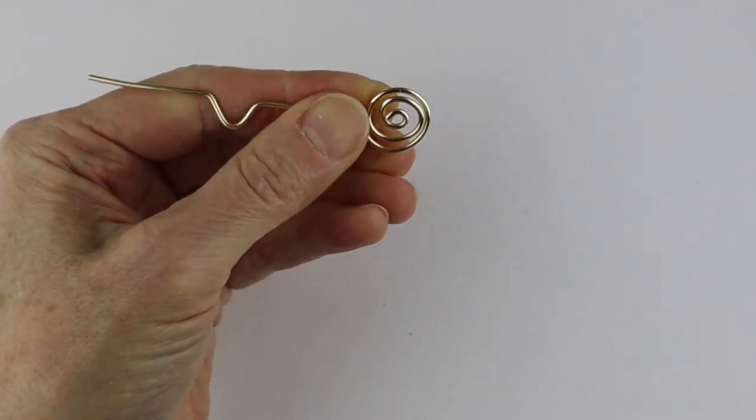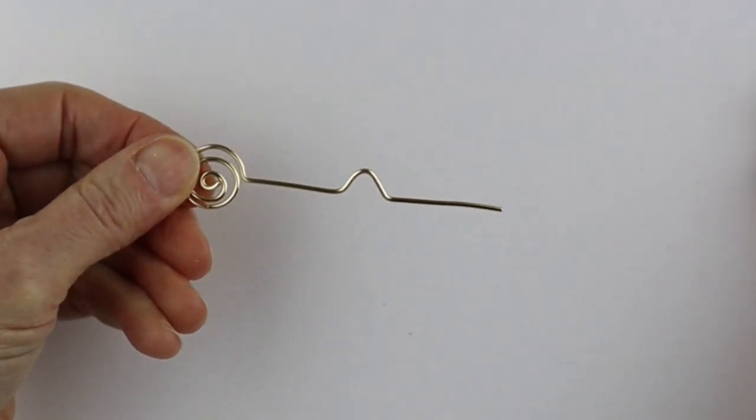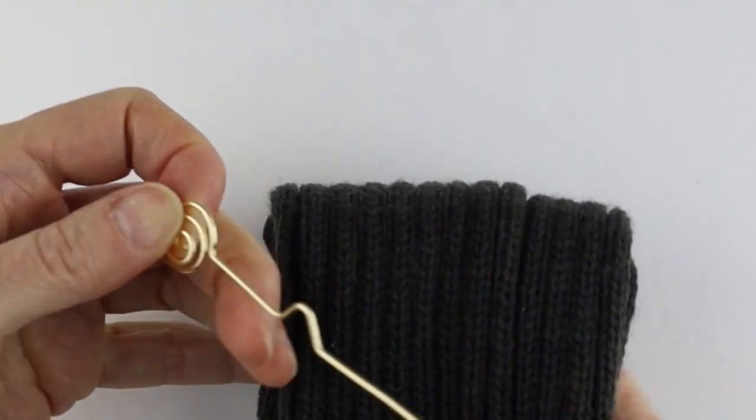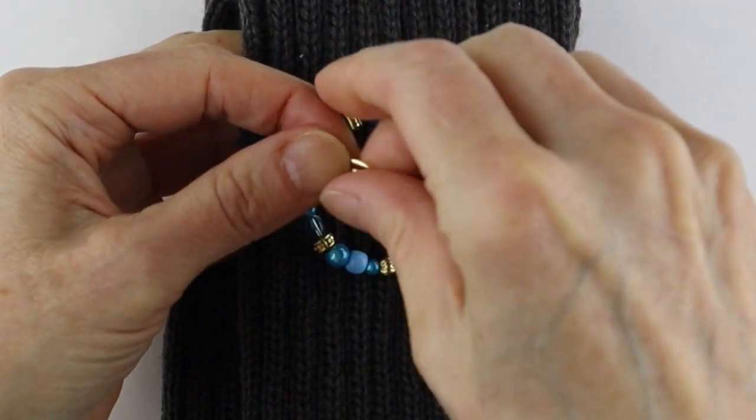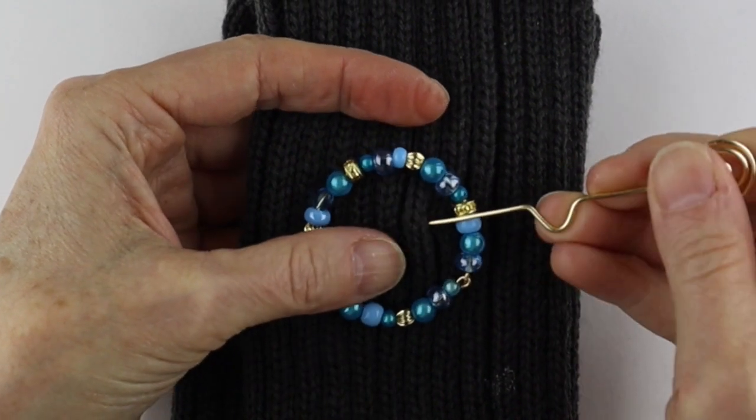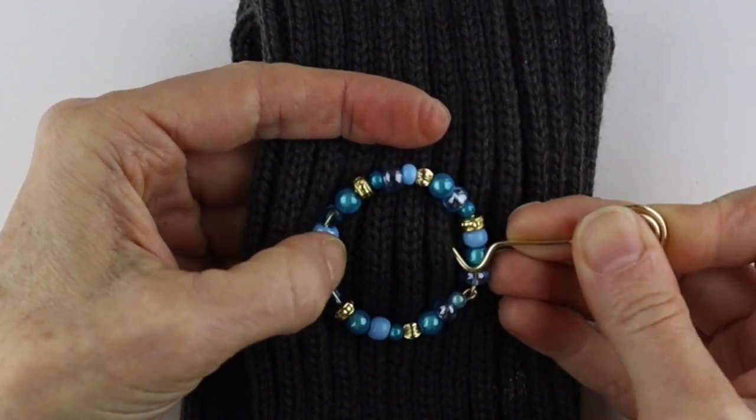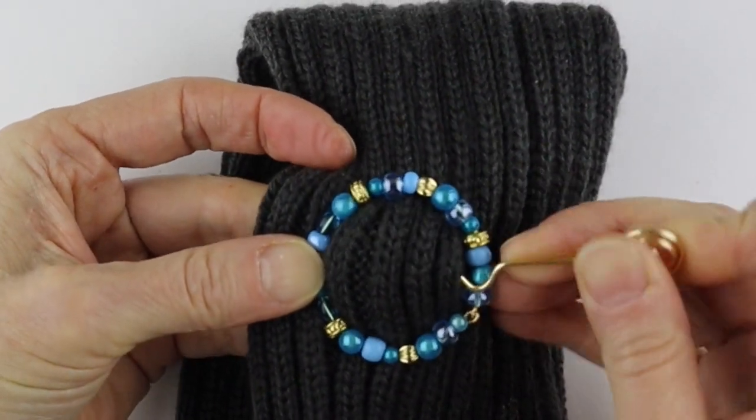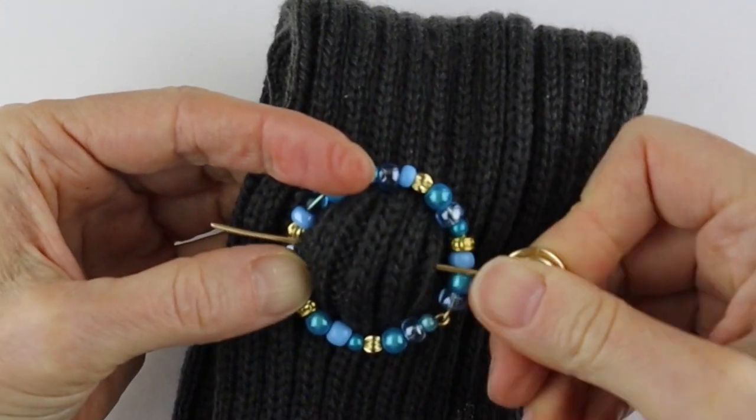That would be your spiral for your pin. I don't have a scarf, so I'm going to use a leg warmer. Just stick the pin here, stick this into the wool, and however much you want to pull up with the pin is fine. You can just wiggle it around and there you have your cute little shawl pin.